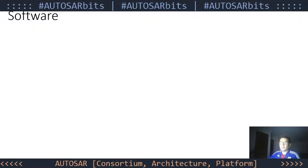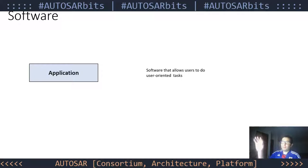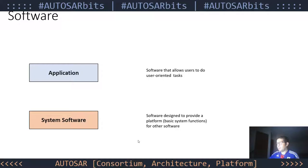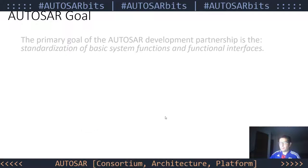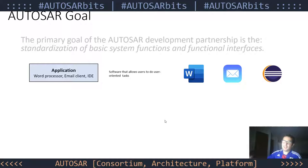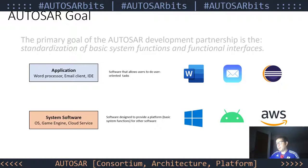What does that mean? Any software can be divided into two parts. The first one is the application — the software that allows users to do user-oriented tasks — and the system software, designed to provide a platform for other software to run. For example, applications include a word processor, an email client, or an IDE. System software examples include an OS, a game engine, or a cloud service. Between them, we have what are called APIs — application programming interfaces — which let the application know what services are provided by the system software.